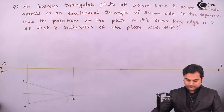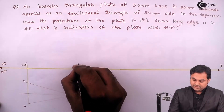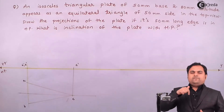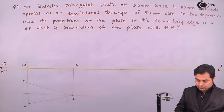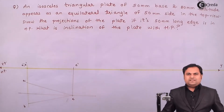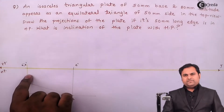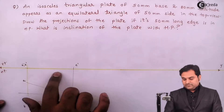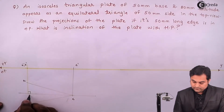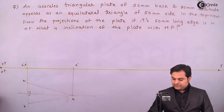In the front view, the points are labeled A dash, B dash, and C dash. The plane now appears as a straight horizontal line in the front view. In projection of planes, if in one view you see the true shape of the object, then in the other view it appears as a line, because a plane has no thickness. From the top it appears as a triangle, but from the front it appears as a line.